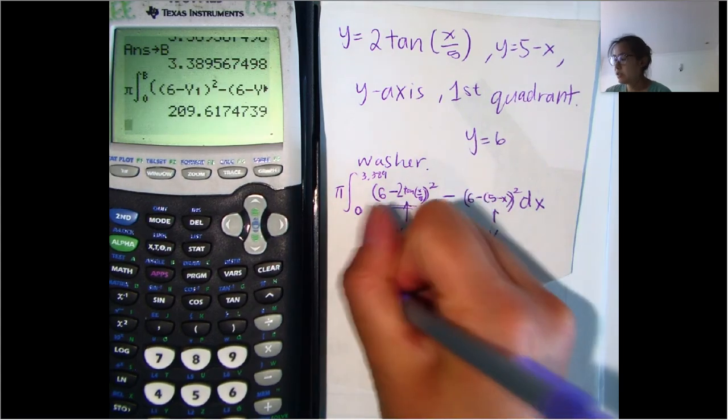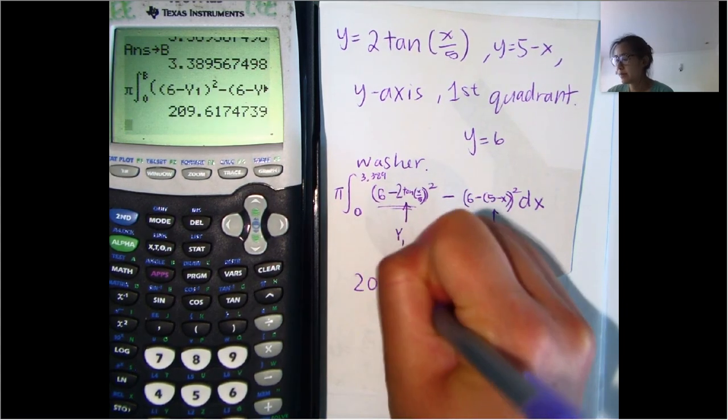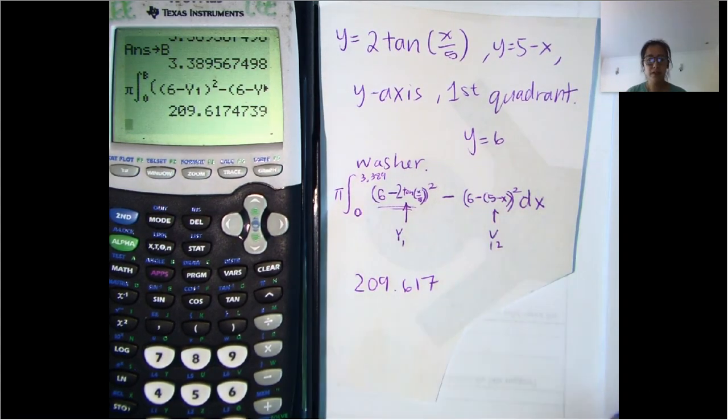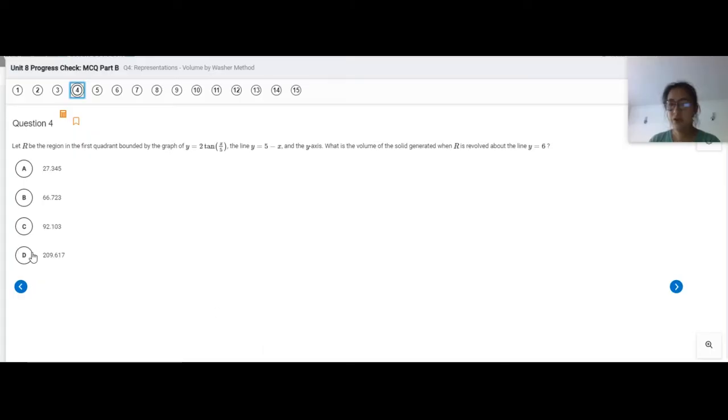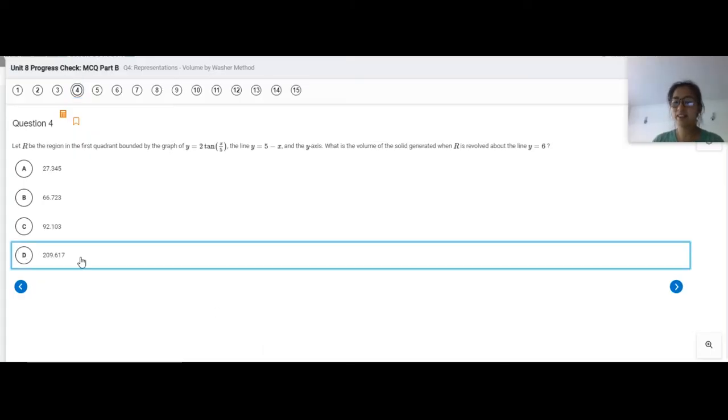So our answer is going to be 209.617. So let's go see what answer choice that is. So that's going to be d, and so our answer is d.